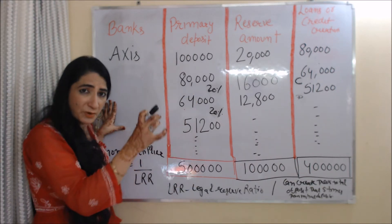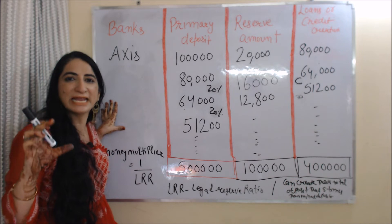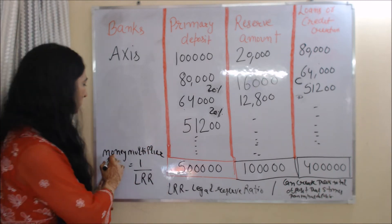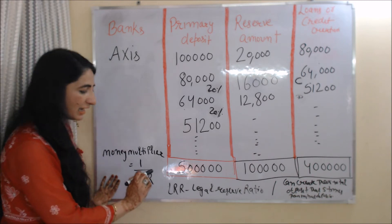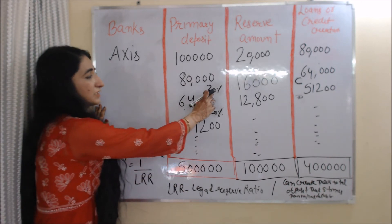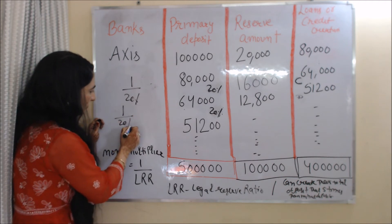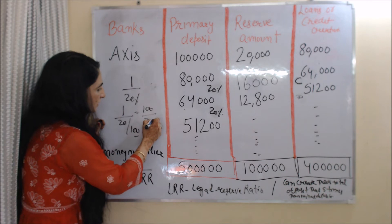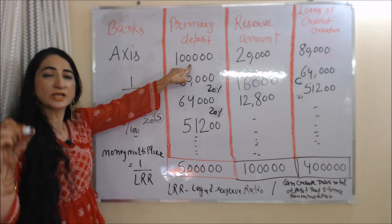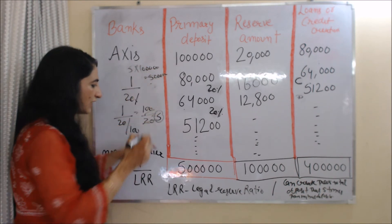When we add all these primary deposits, our total deposits will be 5 lakh. To calculate this, we have a formula: Money Multiplier equals 1 over LRR, where LRR is the legal reserve ratio. Here we assume the reserve ratio is 20%, so we write 1 over 20%, which is 1 divided by 20/100, giving us 100 over 20, equal to 5. We multiply this 5 with our initial deposit of 1 lakh, which equals 5 lakh — our total deposit.